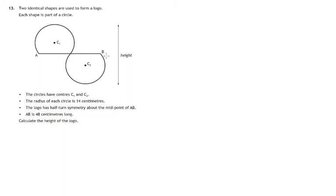Here's the diagram of a logo. There's two identical circles and parts of that circle have been chopped off. We're told the radius of the circle is 14 centimetres.